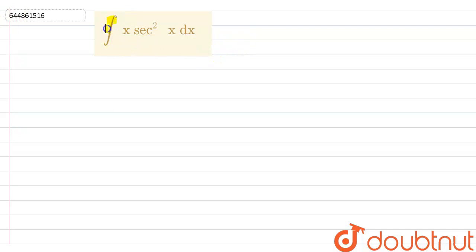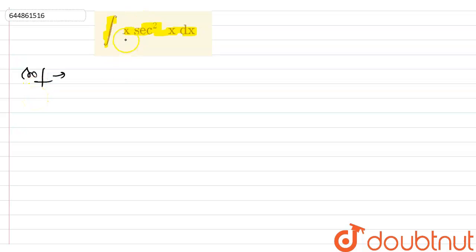Hello everyone. Here we have a question: we have to integrate x·sec²x with respect to x. This is the type of question which can be done by integration by parts, as you can see. We have two types of functions here — a polynomial and a trigonometric function — so we have to do it by by-parts.